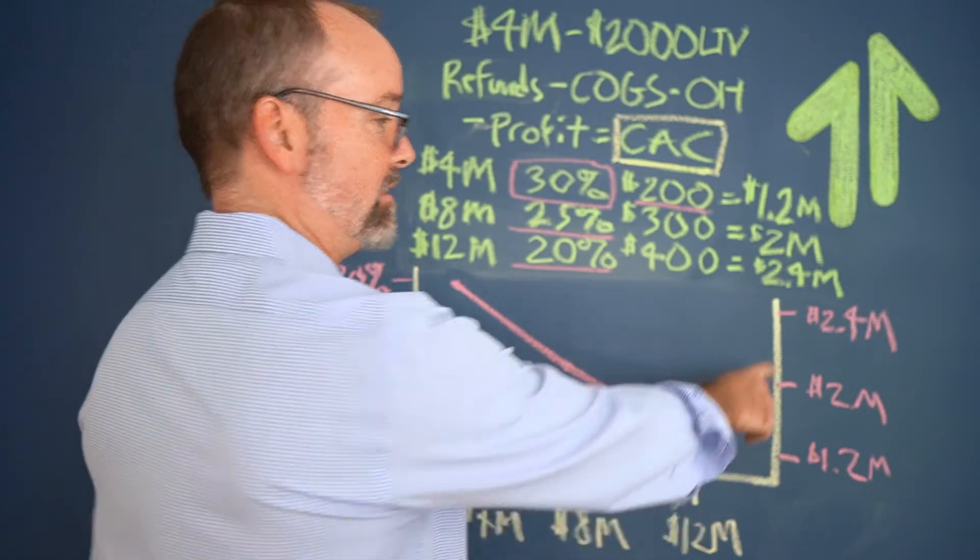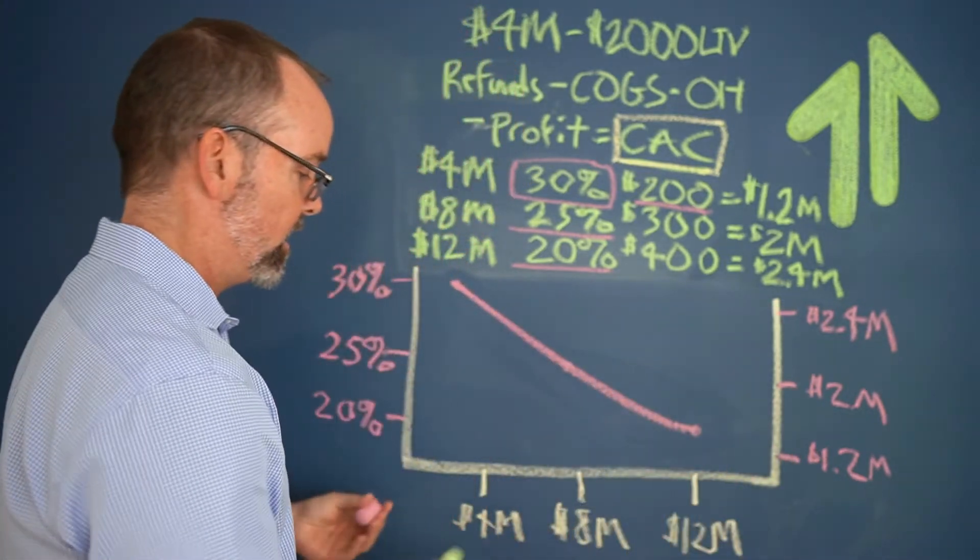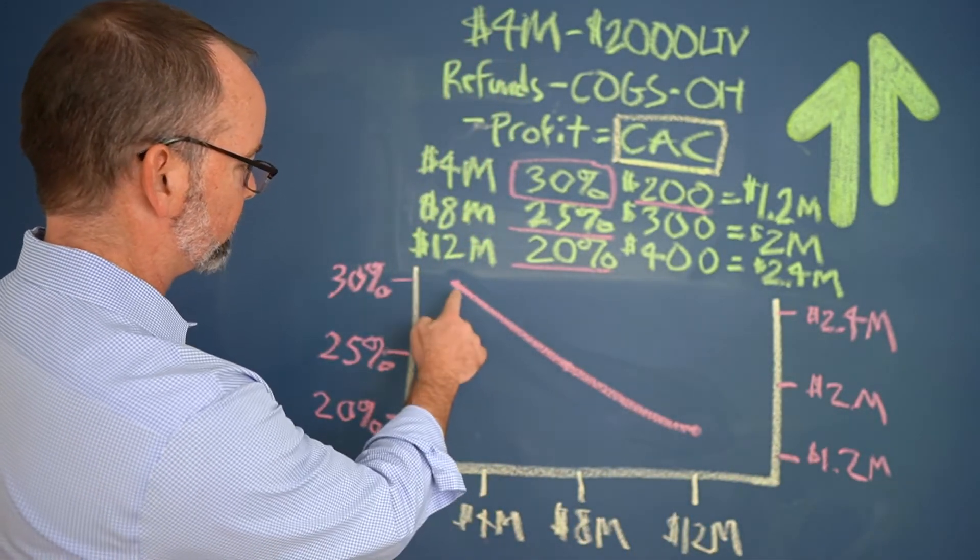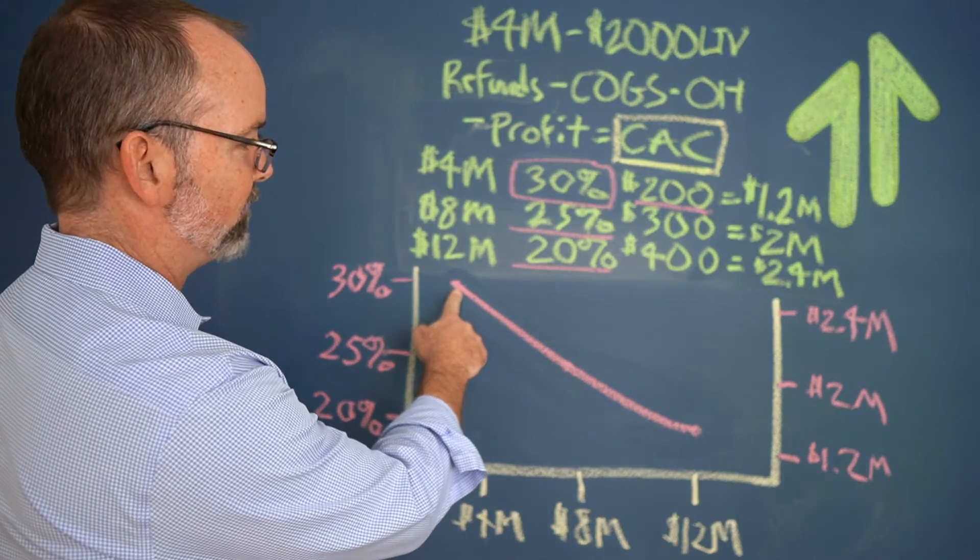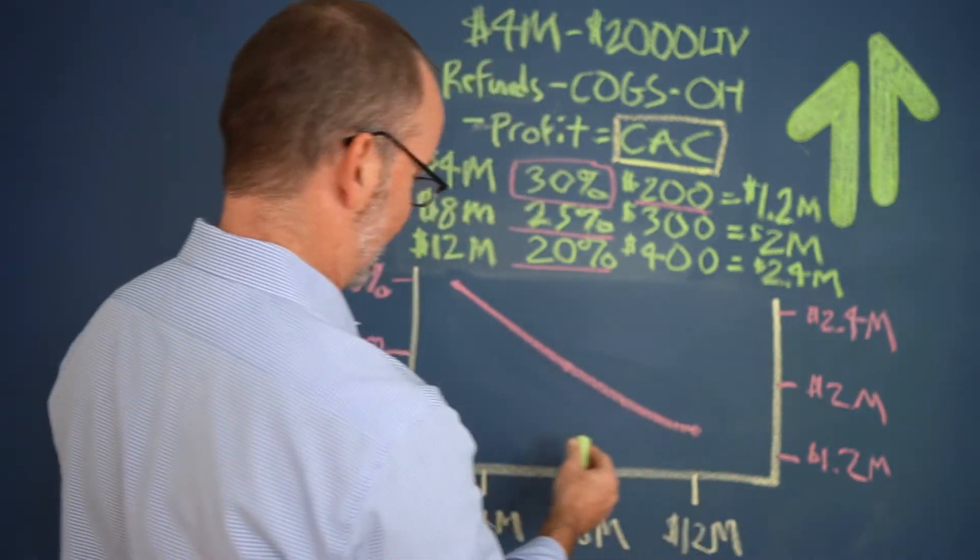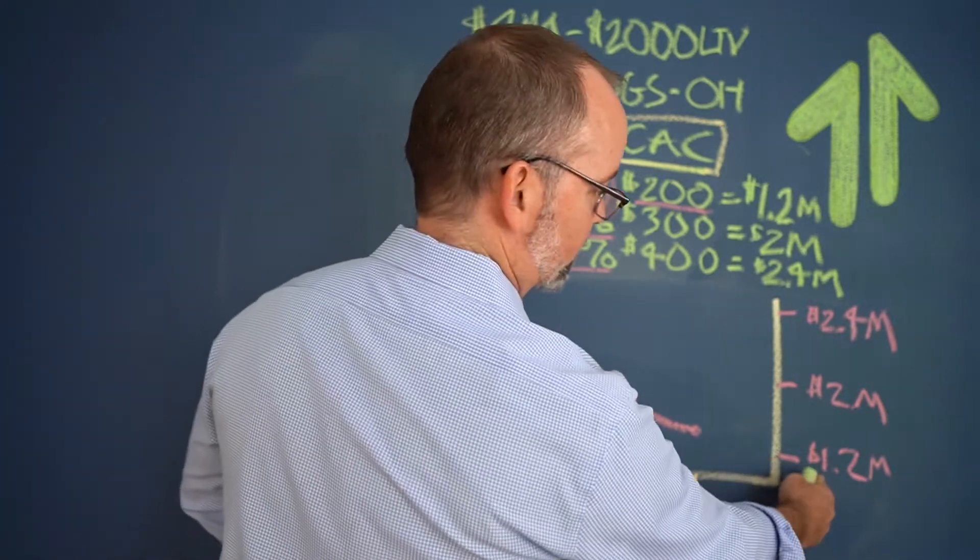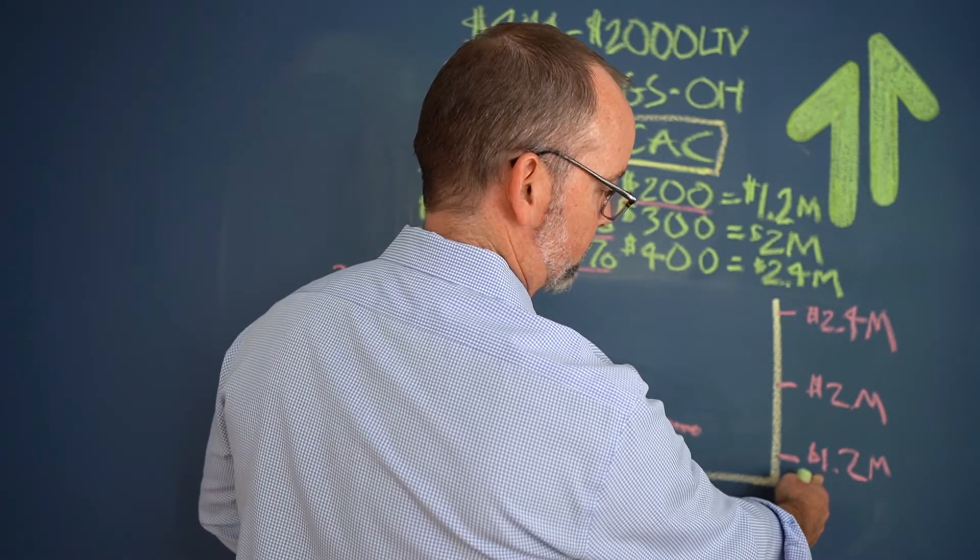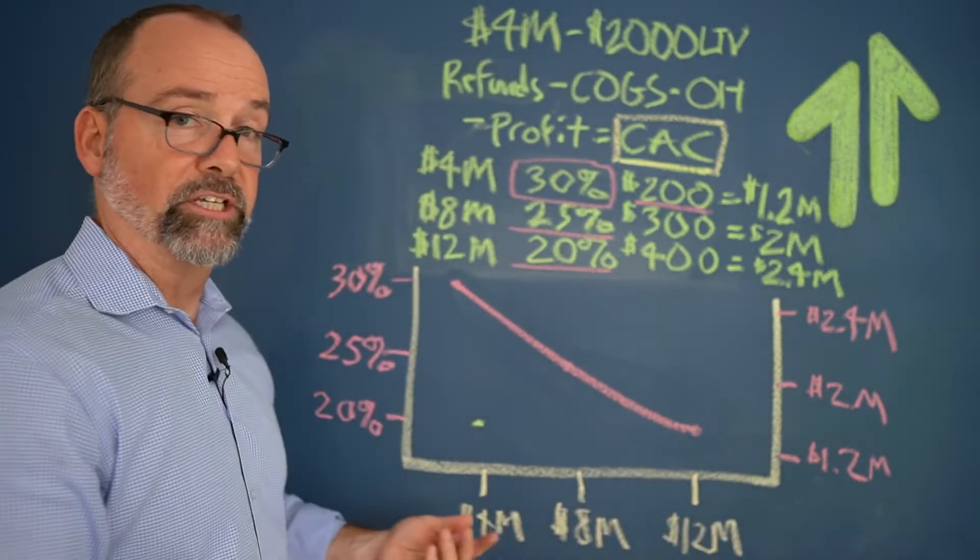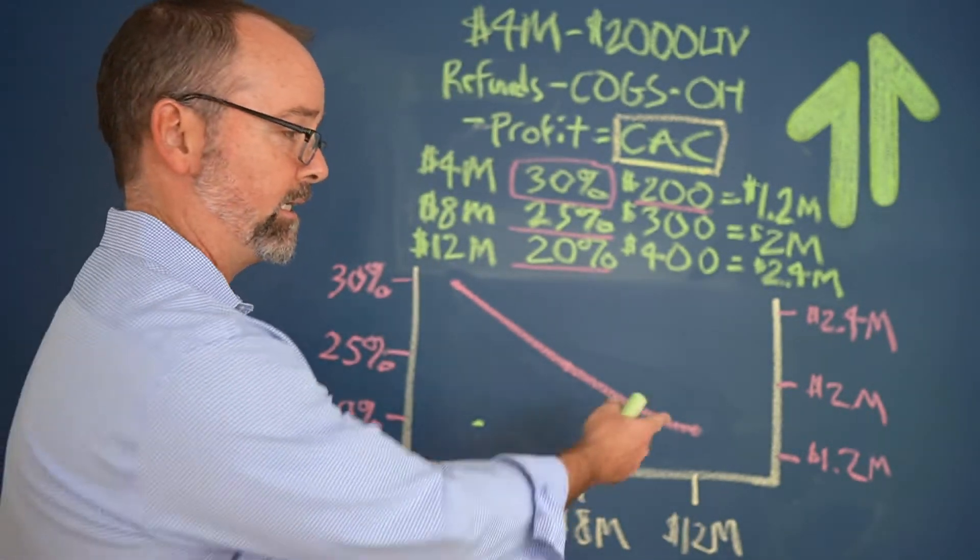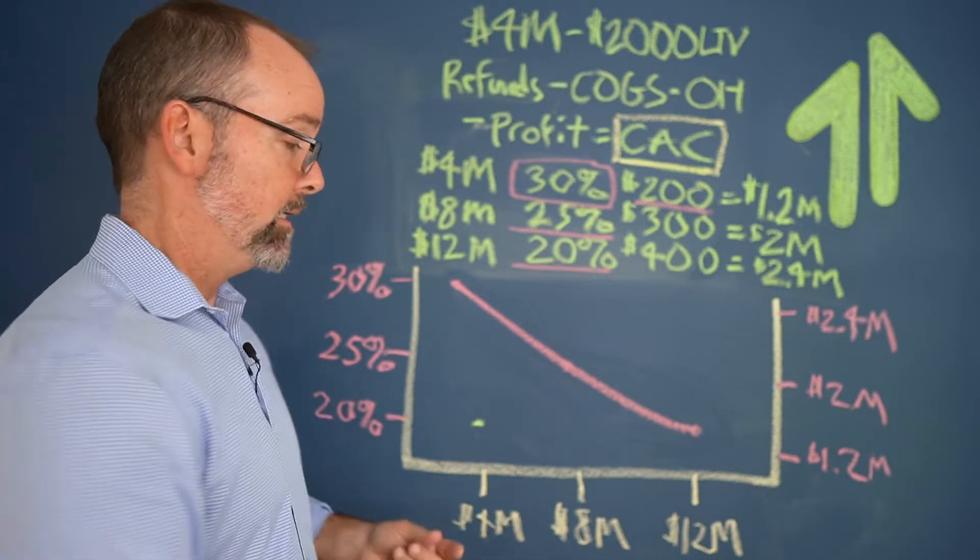So that's what this axis is for here. So our $4 million company at a 30% profit margin is at $1.2 million in profitability. Okay. Now pretty good business there. 30% profit on 4 million equals 1.2 million.